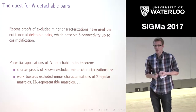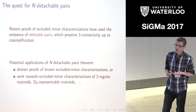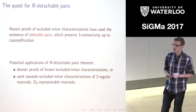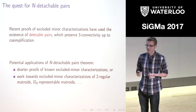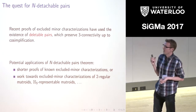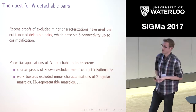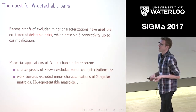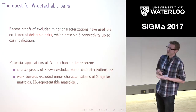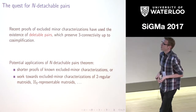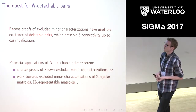In existing excluded minor proofs such as the Geelen–Gerards–Kapoor one, something weaker than an N-detachable pair is used, but this leads to technical difficulties that we hope to avoid by finding these N-detachable pairs. In particular, we think this will be important moving forward in projects towards finding excluded minor characterizations for, for example, perhaps one day GF(5) — the first step along that road being representations for the Hydra-5-representable matroids.